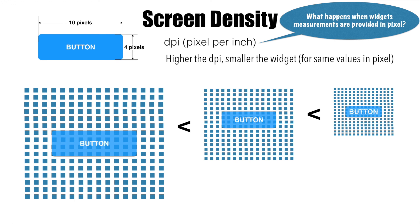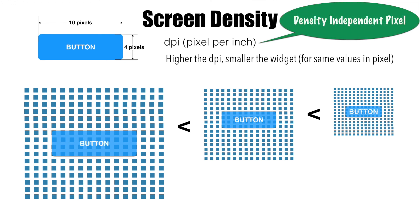With this, we can get into trouble because we don't want the size of the button to change significantly based on the density of the screen. We want to maintain consistently the same size regardless of screen density, and that is where the Density Independent Pixel concept comes into picture — called DIP or DP. So, how does this Density Independent Pixel concept work?